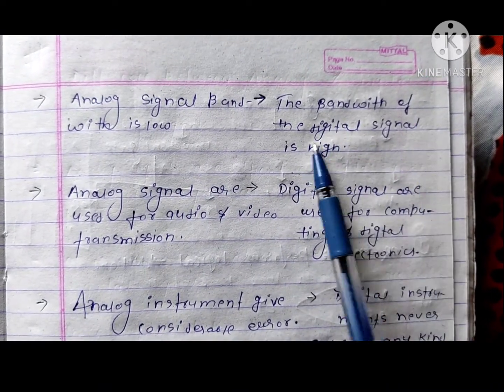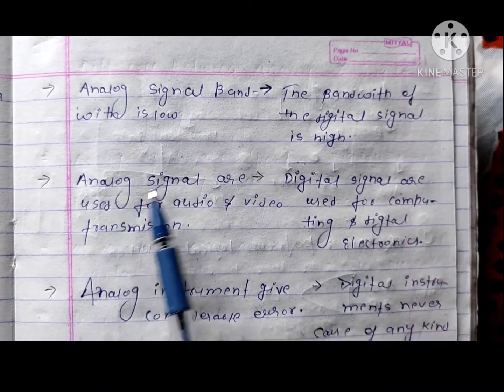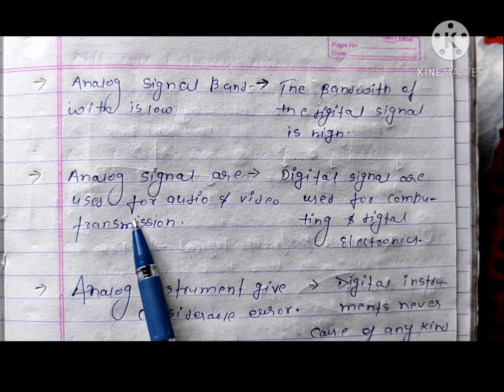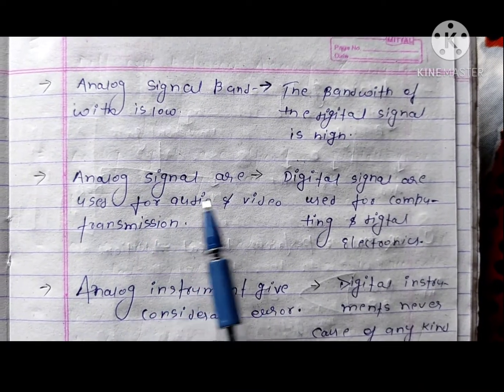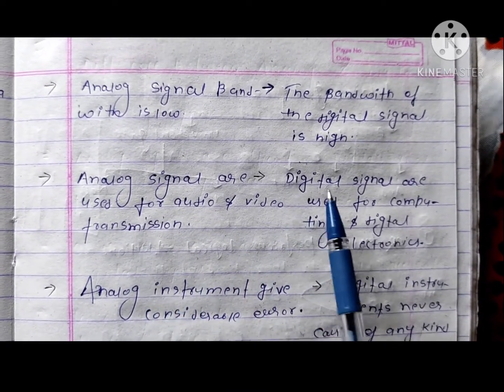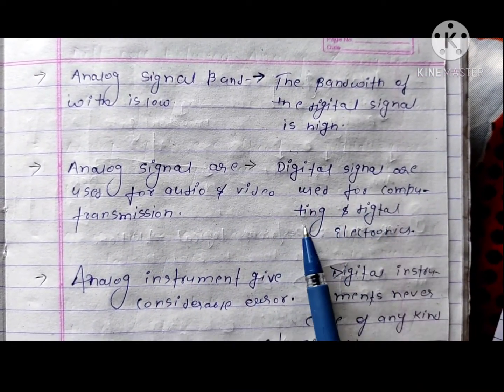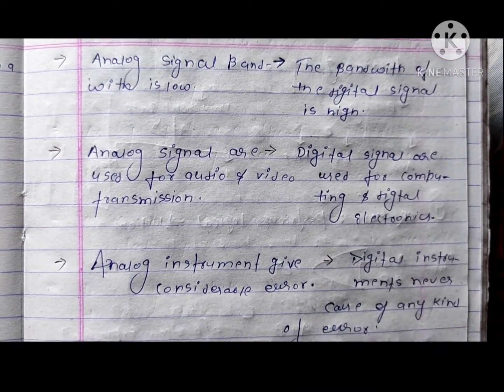Analog signals are used for audio and video transmission, but digital signals are used for computing and digital electronics.